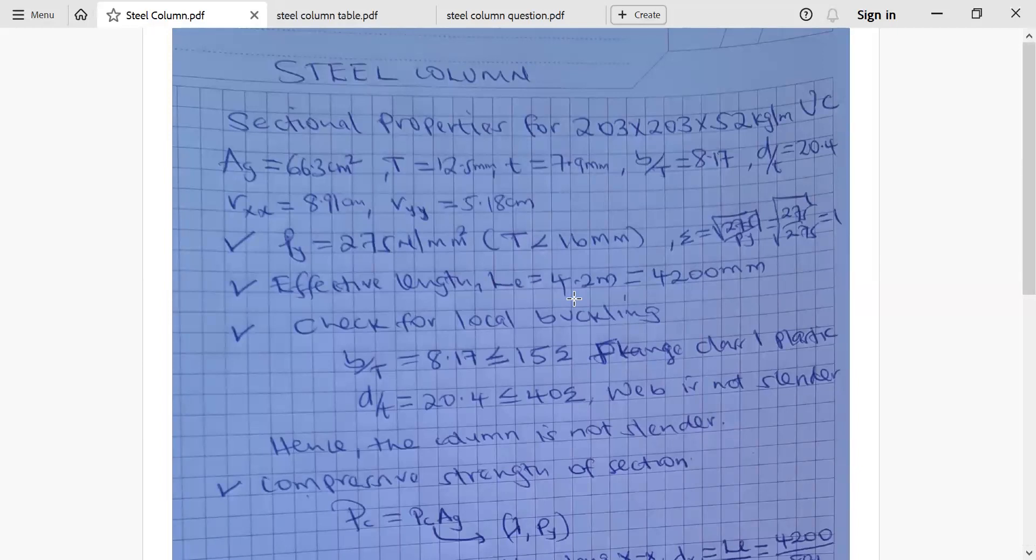Now after that, design steel strength, which is PY, is equivalent to 275 newton per millimeter squared. Why? Because in the equation we are told it is S275. And another reason is because the thickness of flange capital T is below 16 millimeter. So if it's below 16, the PY will be 275 newton per millimeter squared.